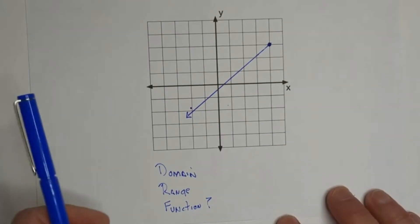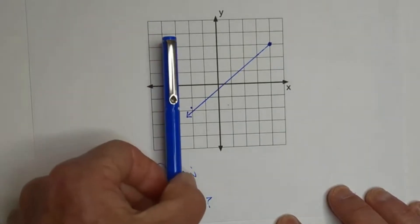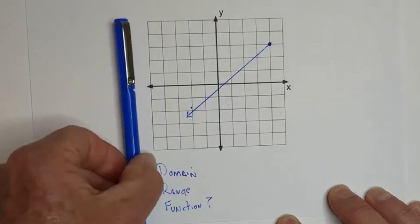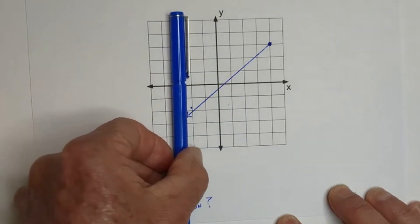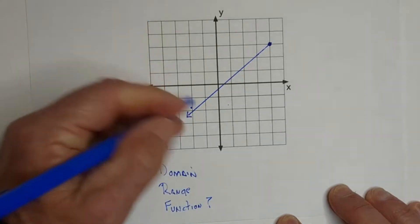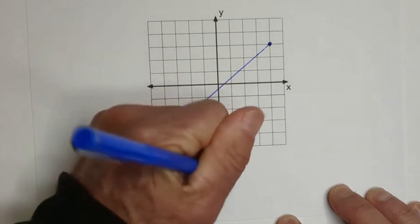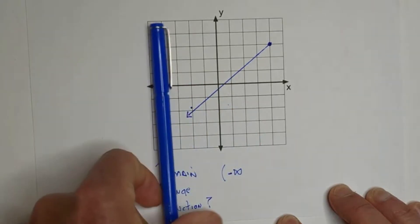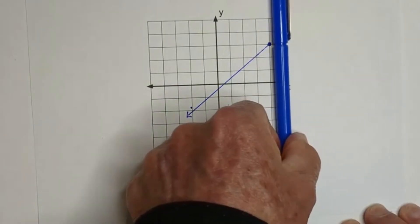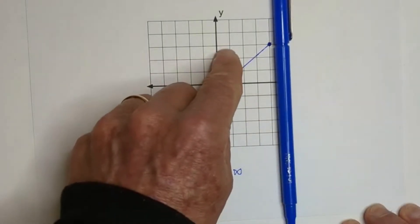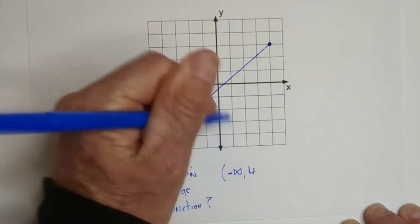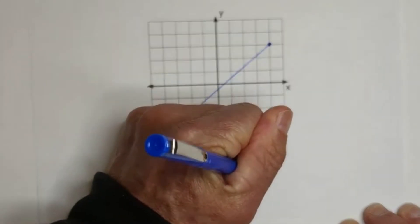On this next example, let's start with the domain — remember, that's the x values and you always read from left to right. Starting on the left, I move over and hit an arrow. An arrow means it goes on in that direction forever, so it's going to be negative infinity. Moving to the other side, the first thing we hit is positive four, and it is closed, so we use a bracket. The domain is (-∞, 4].